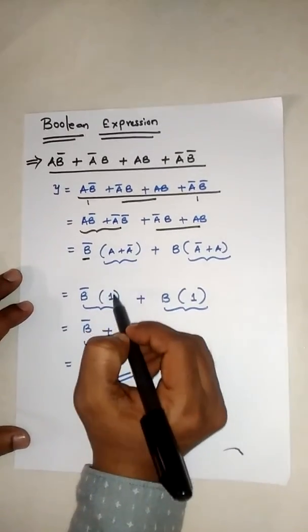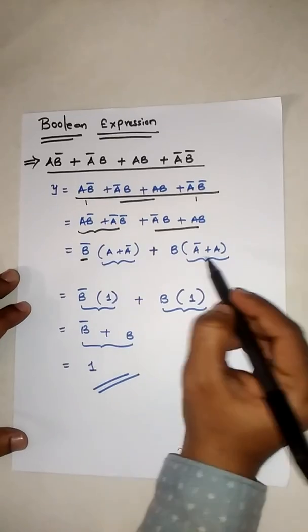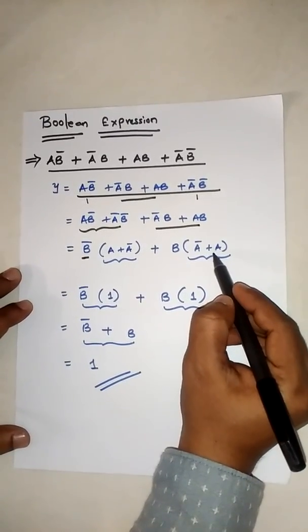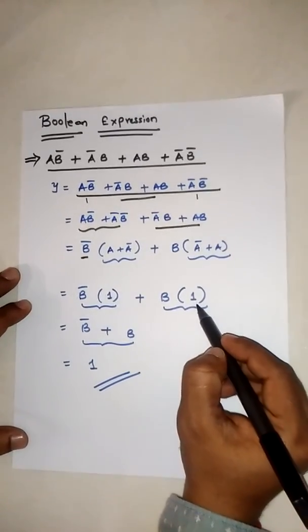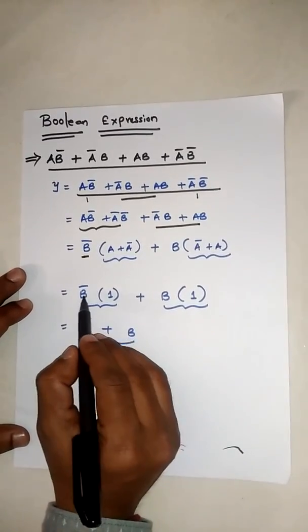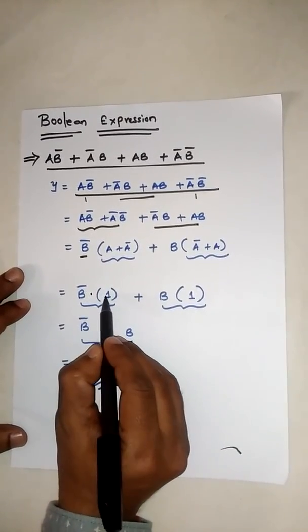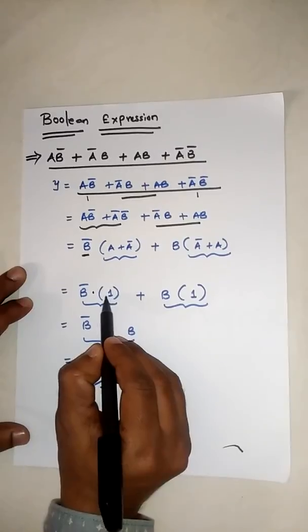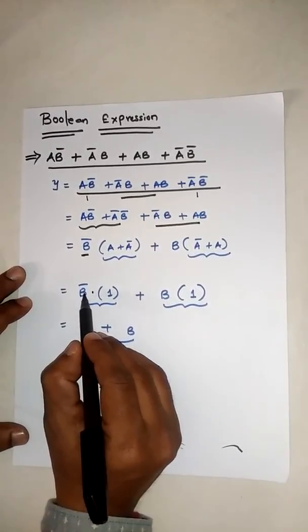We'll get answer as 1, and same way Ā + A on this side also will get answer as 1. Now in the second step, B̄ into 1 will be always equal to B̄, or you can say that 1 into anything is that thing only.